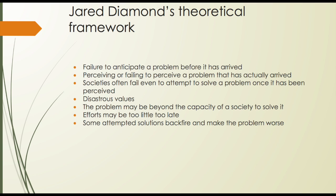The third is that societies often fail even to attempt to solve a problem once it has been perceived. This is the most frequent and most surprising because it involves rational behavior — humans believe a certain thing will benefit them but will affect others negatively. And although this might be correct reasoning, it is morally incorrect. The fourth is disastrous values: focusing on values that are no longer applicable to the current life situation.